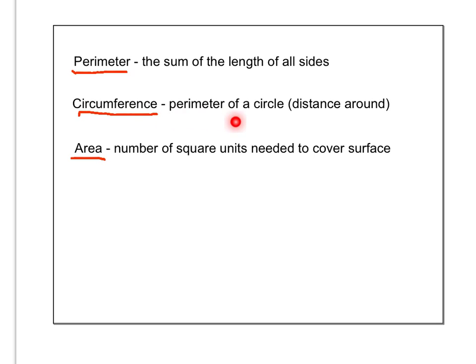Circumference is the perimeter of a circle. So instead of using the word perimeter when we're talking about a circle, we use the word circumference. And that is just talking about the distance around a circle. So if I were to go around a circle, I call that the circumference.